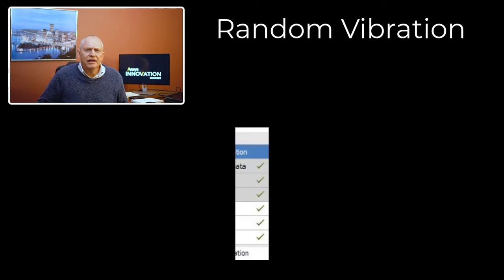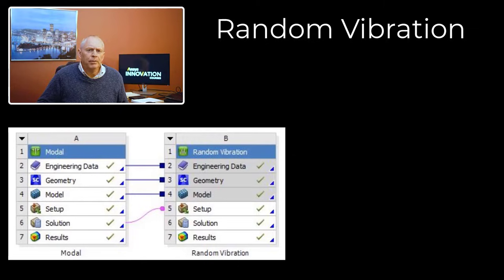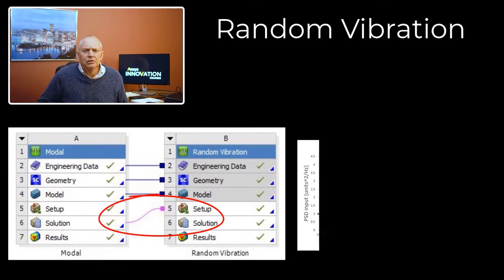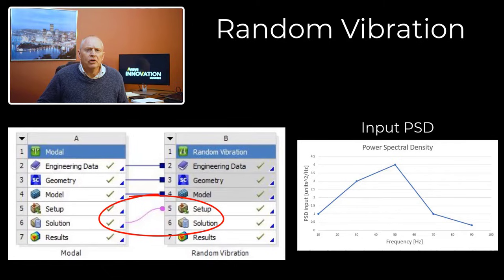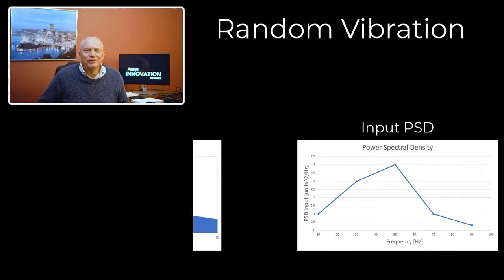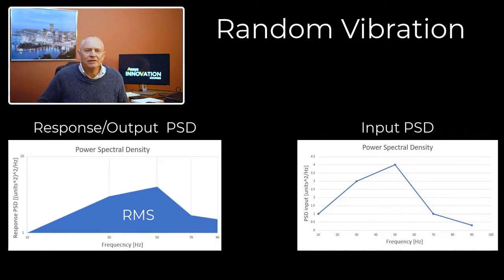Random vibration analysis uses a mode superposition method that requires input from linear natural frequency analysis or modal analysis and power spectral density curves, which are representations of vibration frequencies and energy in a statistical form. The analysis determines the root mean square response of the displacements and stresses resulting from constant, random vibration over time.